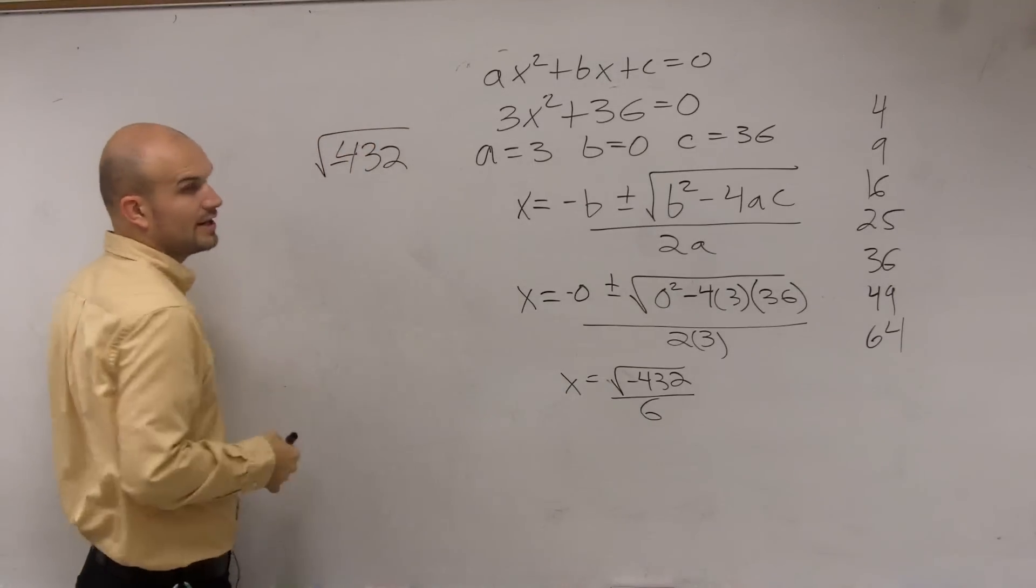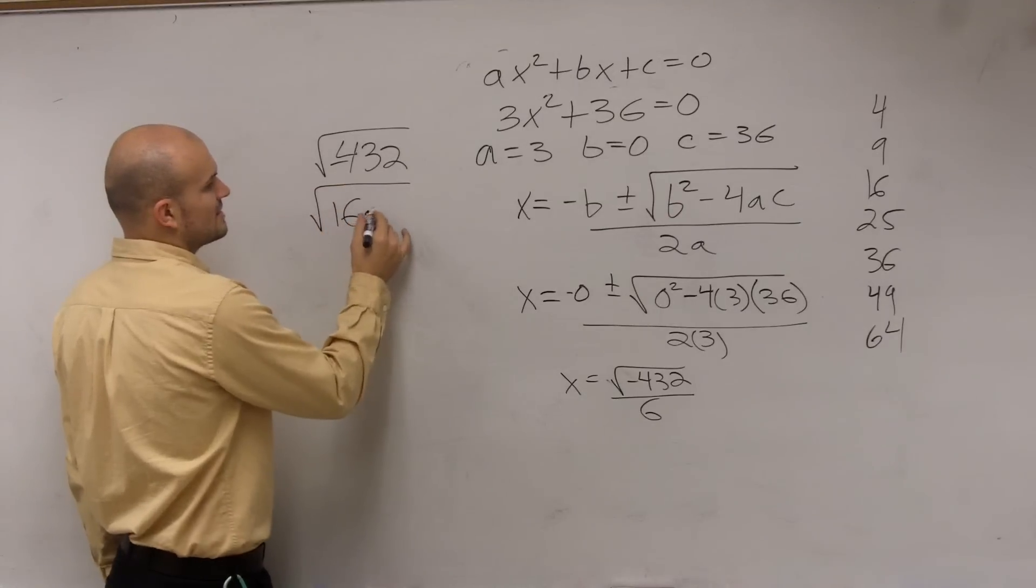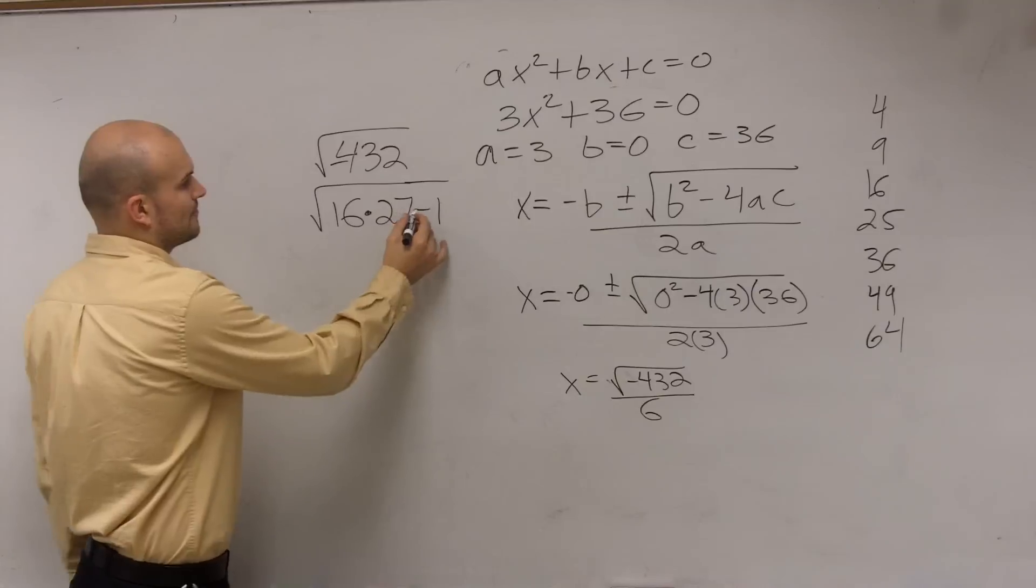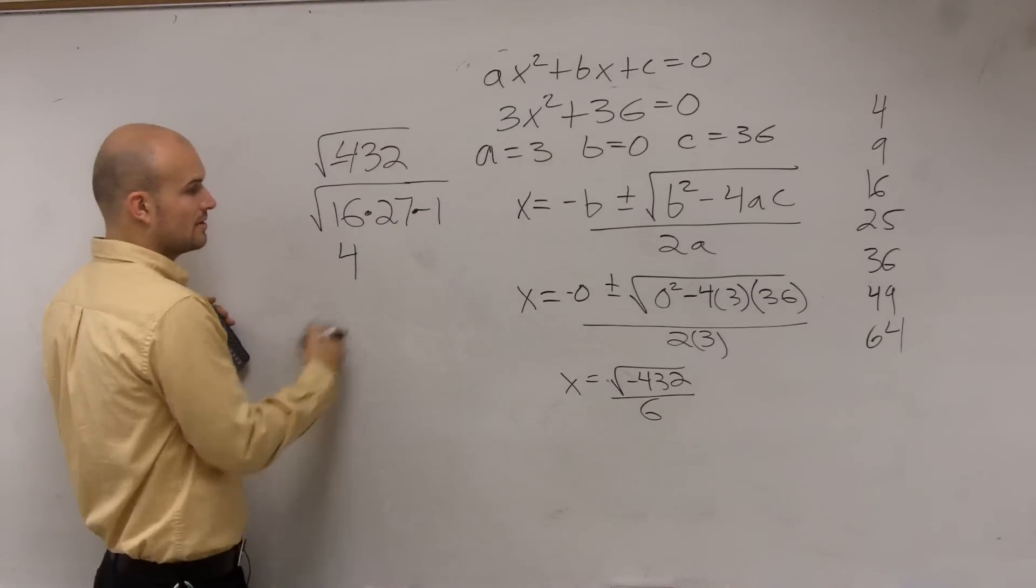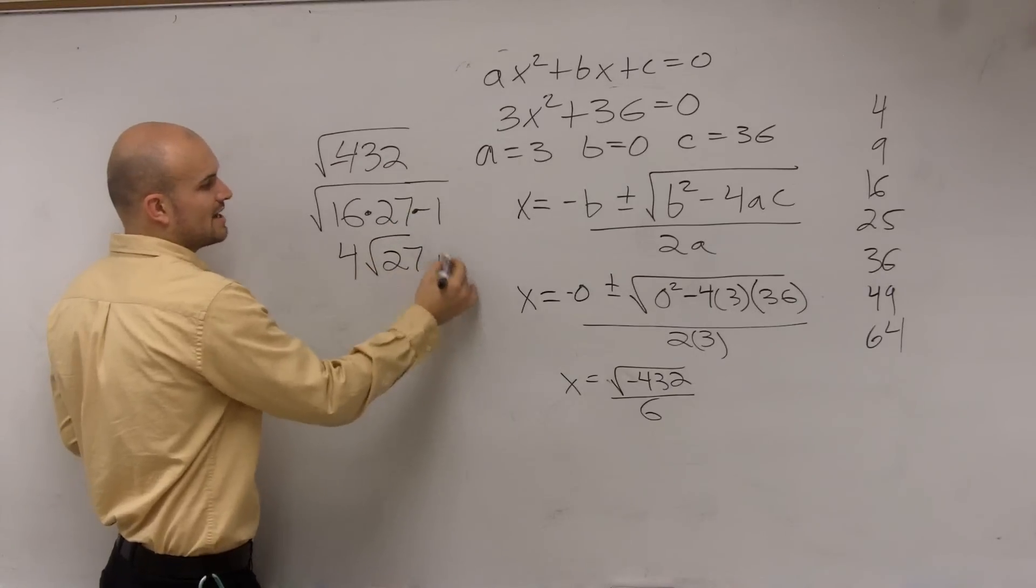So how do you simplify 432? Let's go ahead and do a square root of 16 times 27 times negative 1. Well, what's the square root of 16? 4. Square root of 27. Square root of negative 1 is i.